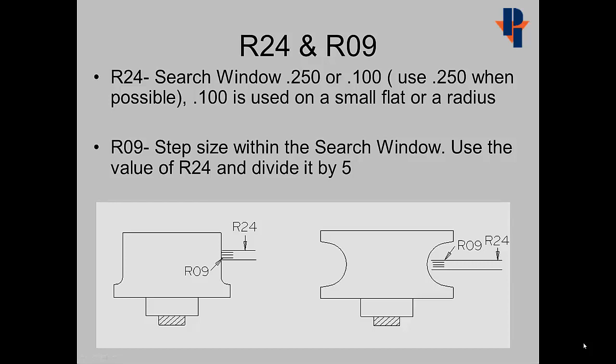R24 is a size of a search window. Either 0.25 or 0.1 is to be used. Use 0.25 when possible. Use 0.1 on a small flat or on a radius. R9 is a step size within the search window. Use the value from R24 and divide it by 5.